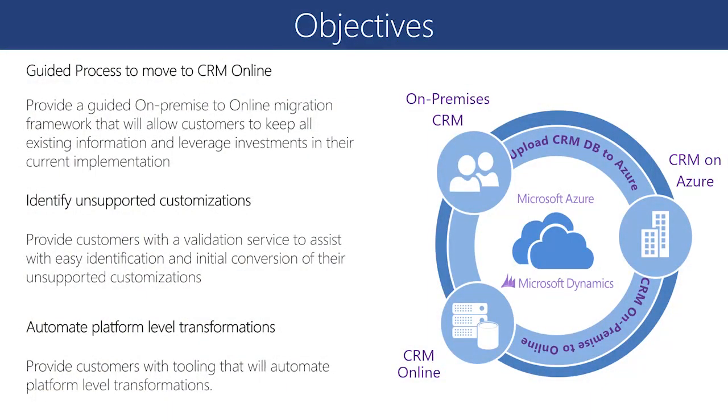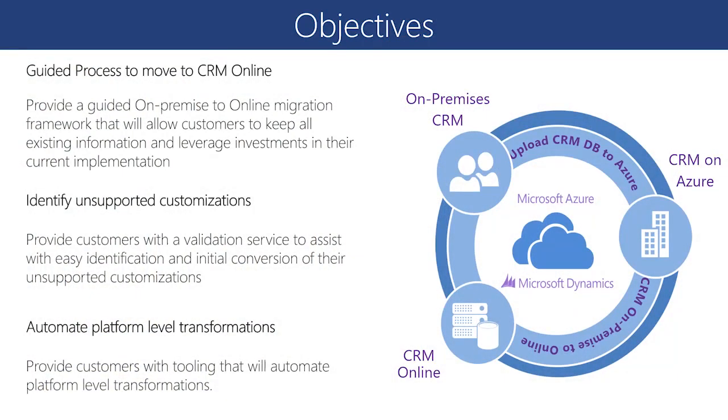With the success of the FastTrack program for Dynamics 365 Customer Engagement, the team is enhancing our FastTrack service catalog with On-Premise to Online Migration Service. As you know, Dynamics 365 has a very strong on-premise footprint in our customers' environments. With the cloud momentum, our customers are struggling to move to online in multiple aspects: lack of guidance to move to online, difficulty finding what is supported in an online environment, and too many manual steps to move to online. With those challenges, the Dynamics 365 product team created this On-Premise to Online Migration Tool.